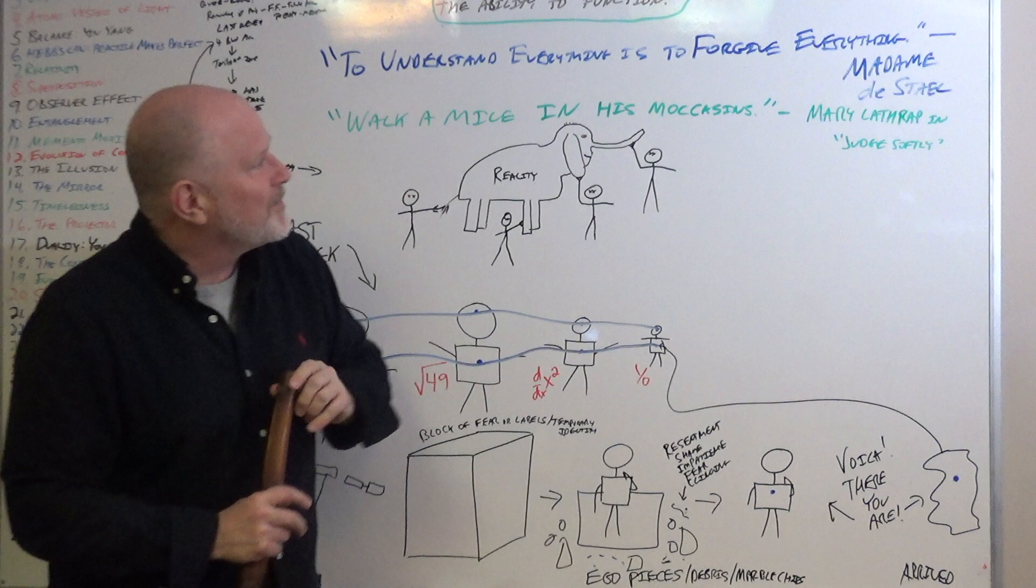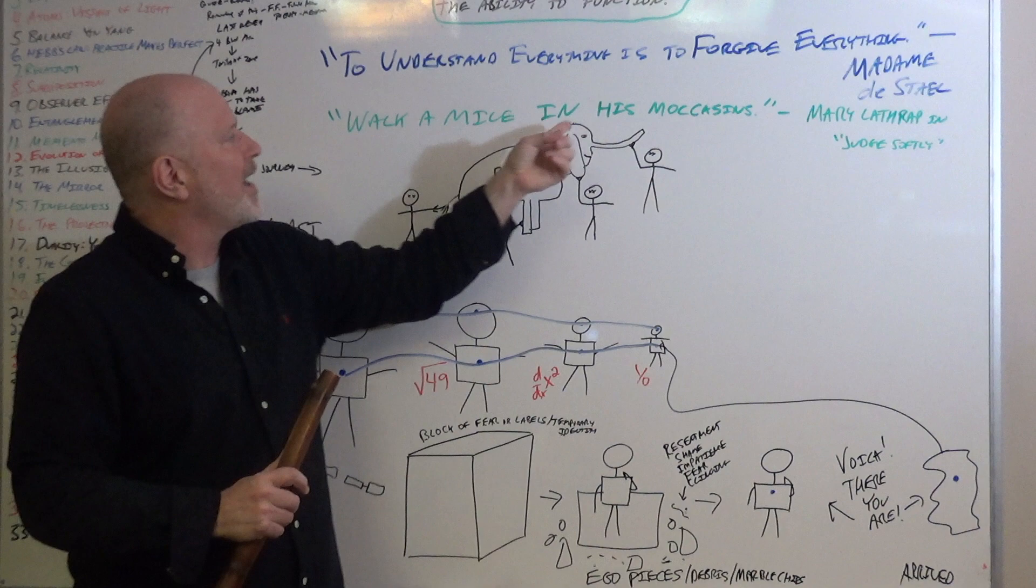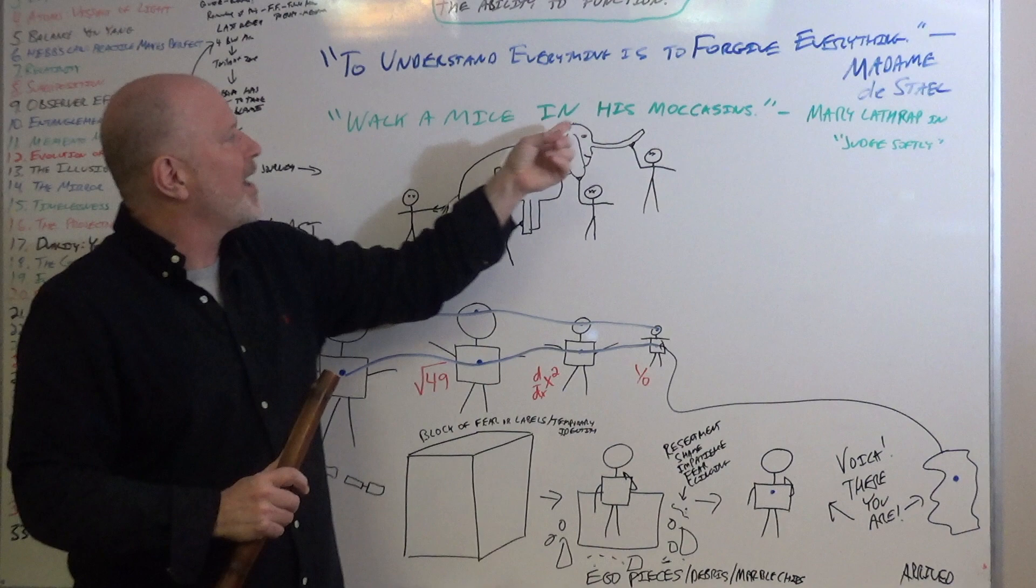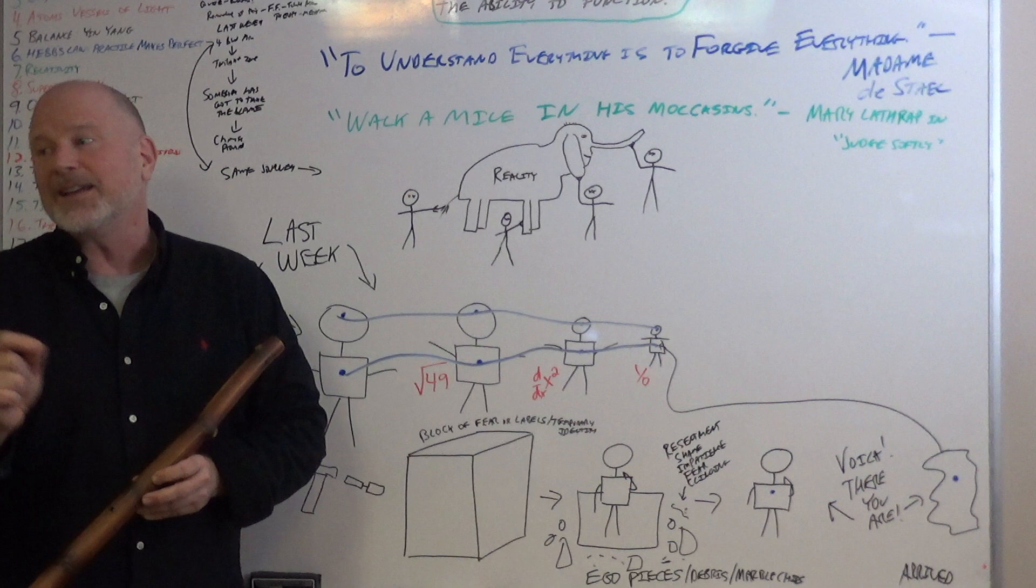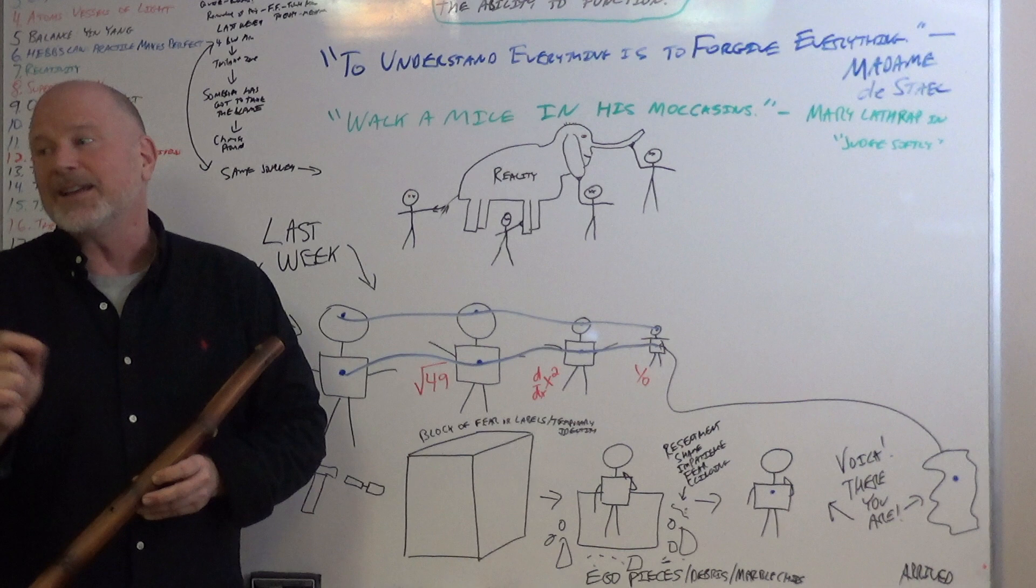Another female poet, Mary Lathrop, in the poem Judge Softly said that we should walk a mile in his moccasins. Now I've looked up, there's many different ways of saying that phrase. Don't judge a man until you've walked two weeks in his shoes or whatever. But that's the earliest writing that I saw in the late 1800s. And she says we should judge softly. Well, Jesus says to judge correctly. And that is what we're talking about.